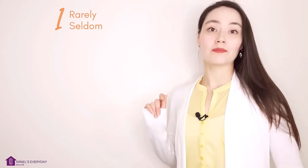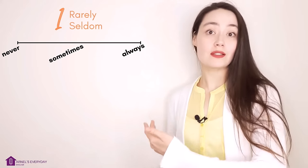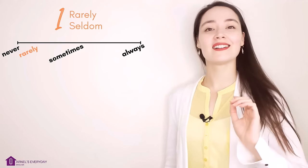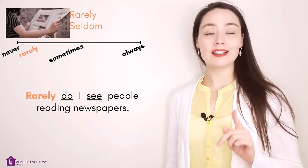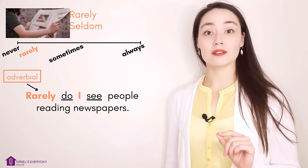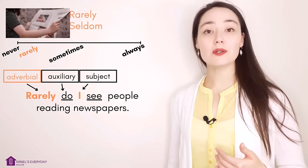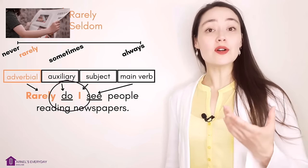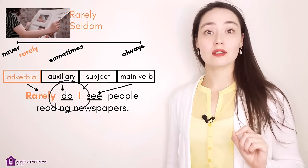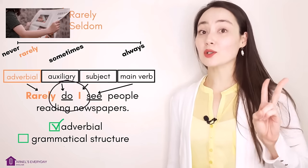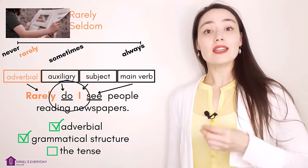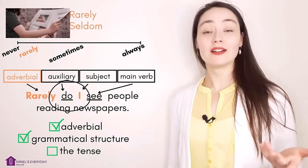Group number one: 'rarely'. You know what rarely means — between never and sometimes. The example: 'Rarely do I see people reading newspapers.' Let's look at that structure: adverbial, auxiliary verb, subject, main verb. When we invert sentences, you need to remember three things: your adverbial — check; the grammatical structure — check; and think about the tense you want to use. Here I'm using present simple — tense, check.